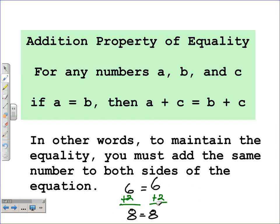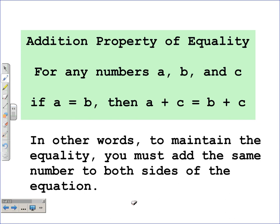The first property we have here is the addition property of equality. It reads: for any numbers a, b, and c, if a is equal to b, then a plus c is equal to b plus c. In other words, to maintain the equality, you must add the same number to both sides.